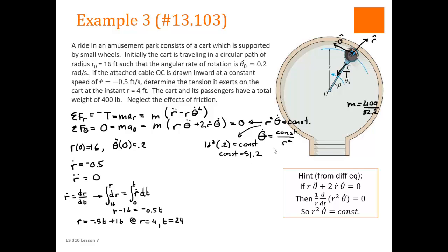So we then have this expression for theta dot, which is 51.2 divided by r squared. So at this point where r is 4, so theta dot at this time of 24 seconds, which we found down here, where r is 4, is going to equal 3.2, which is 51.2 divided by 4 squared.